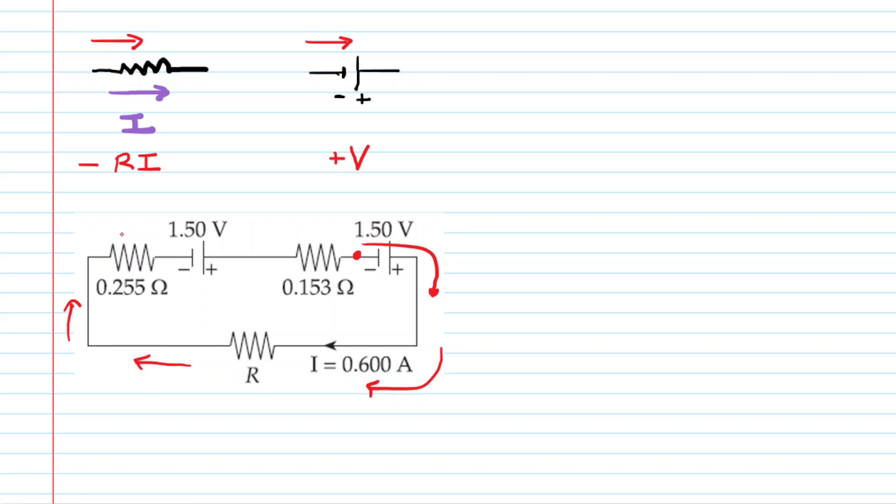Now as you move through the loop, you have to keep track of all the potential changes that you encounter. So for example, starting at the red dot, encountering this battery first, we are going from the negative to the positive terminal. As stated, that potential change will be a positive voltage. So in this case, it'll be a positive 1.5 volts. That is our first potential difference or potential change.